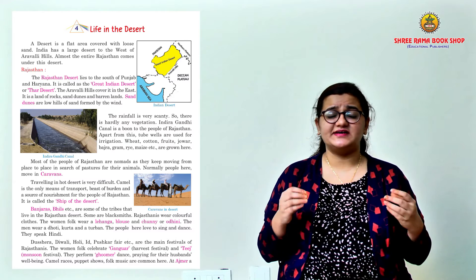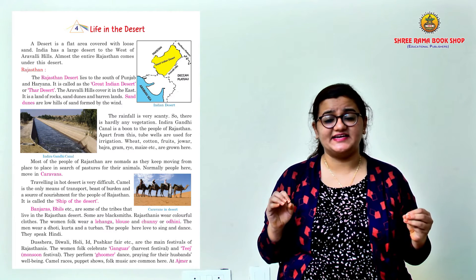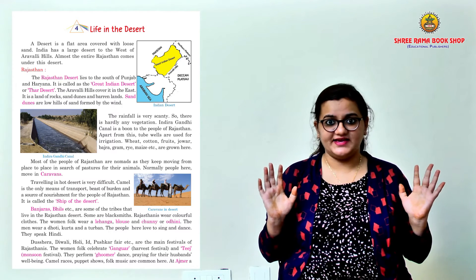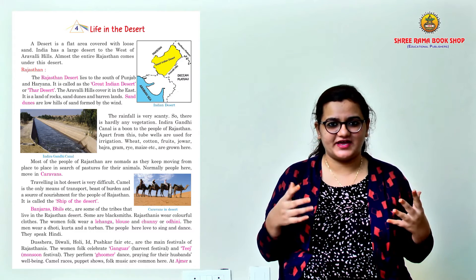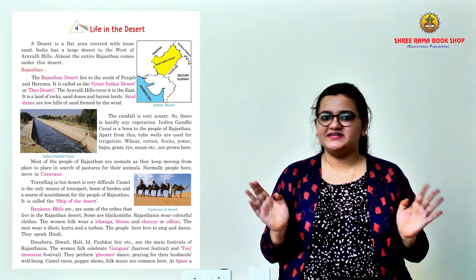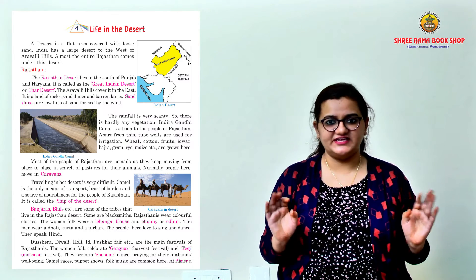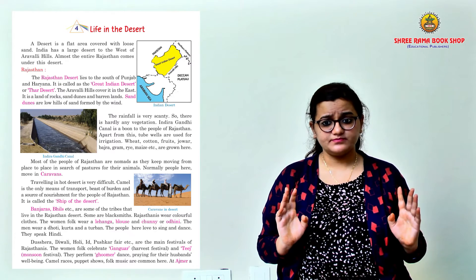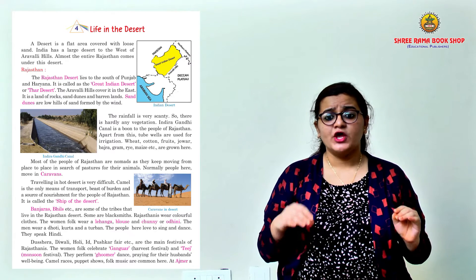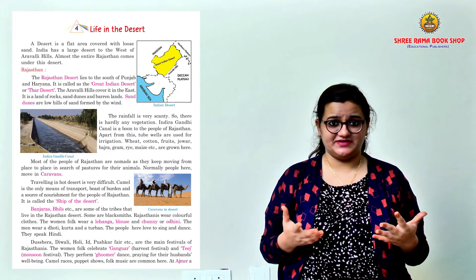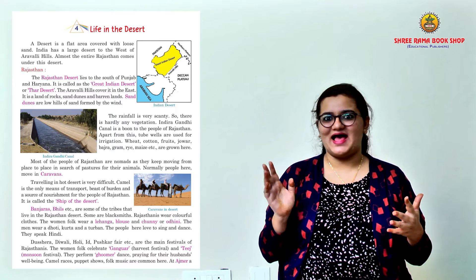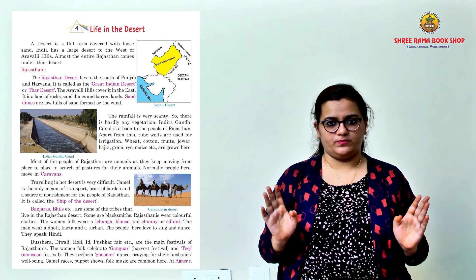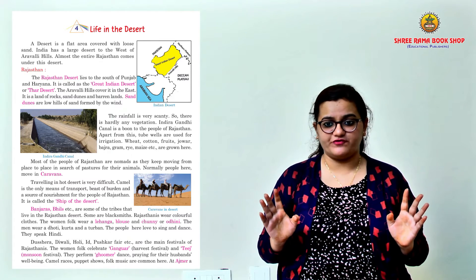Coming to the rainfall, the rainfall here is very scanty — that is, no normal rainfall. Like we have a rainy season full of rain, but here, no. Scanty means very, very low rainfall. And so there is hardly any vegetation. Vegetation means plants, forests, trees — none, because of the low rainfall.